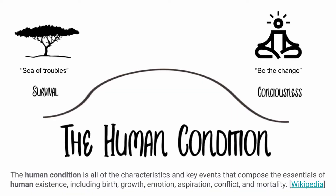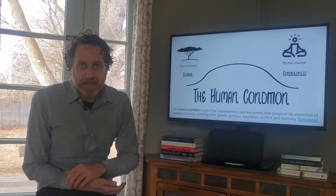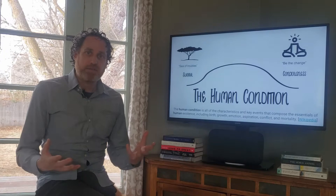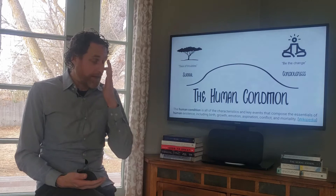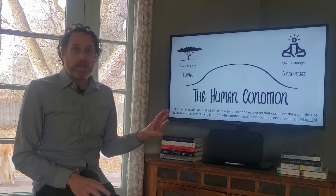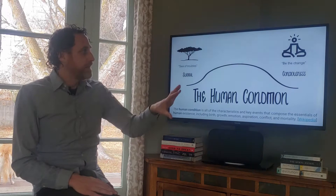If you look up a definition of the human condition on Wikipedia, you get: all the characteristics and key events that compose the essentials of human existence—birth, growth, emotion, aspiration, conflict, and mortality. Philosophers invoke this concept to describe one of the biggest challenges of human civilization: how to live in peace, sustainably, in a way that benefits everybody.